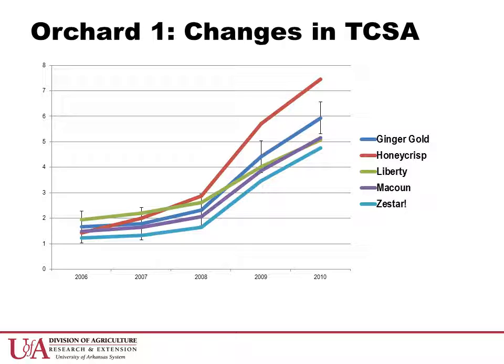It is also a standard measurement that measures relative tree growth in a fairly simple way. It is important to note that Honeycrisp, due to its inherently lower vigor, was grafted onto a slightly more vigorous rootstock, Malling 26, than the fully dwarf Budagoski 9 rootstock that the other four varieties were grafted onto.